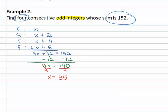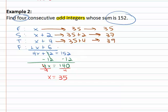Of course that's not our final answer, we still have to go in and say the first number is 35, the second number is 35 plus 2 which is 37. The third is 35 plus 4 which is 39, and the fourth is 35 plus 6 which is 41.